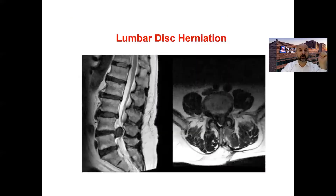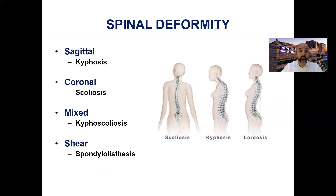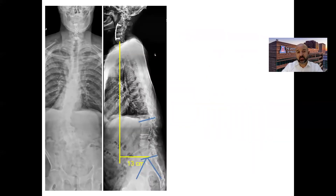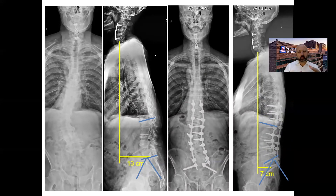Going a bit beyond bread-and-butter cases, several of us enjoy spinal deformity surgery, including scoliosis, kyphosis, or any mixed form. We also do a lot of spondylolisthesis surgery, which involves slippage or malalignment of the spine. This is an example of one of my patients who had severe degenerative lumbar scoliosis and kyphosis, requiring a large surgery — T9 or T10 to pelvis — where we decompress the spinal canal and also realign and correct the curvature.